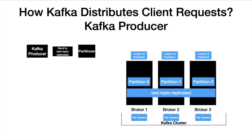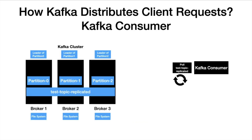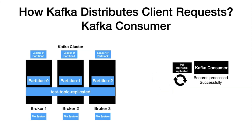Now it's time to look at how the client requests are distributed from the Kafka consumer end. We have the consumer ready to poll the test topic. When the poll loop is executed, the request goes to all the partitions and retrieves the records from them. Here, each broker owns a partition, so the poll loop request goes to all the brokers and retrieves the records. The retrieved records are handed over to the Kafka consumer, which processes them successfully, and the same flow repeats.